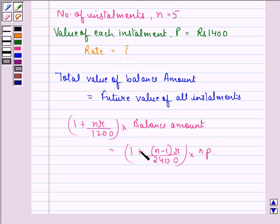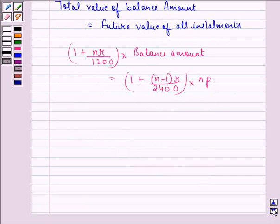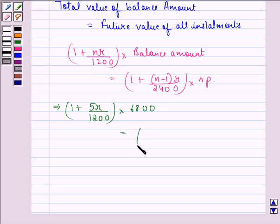We know that N equals 5 and P equals Rs 1,400. This implies (1 + 5R/1200) times 6800 equals (1 + (5-1)R/2400) times 5 times 1,400, which simplifies to (1 + 5R/1200) times 6800 equals (1 + 4R/2400) times 7000.